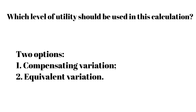Compensating variation is the amount of money we would have to give a consumer after a price increase to keep the consumer on their original indifference curve, or initial utility. Equivalent variation is the amount of money we would have to take away from a consumer to harm the consumer as much as the price increase did.